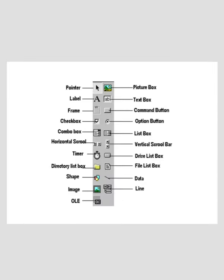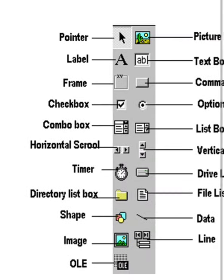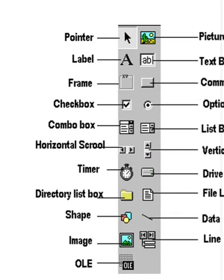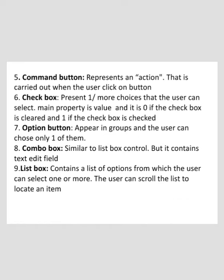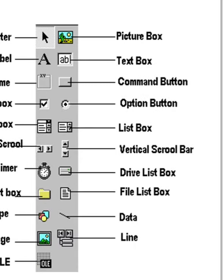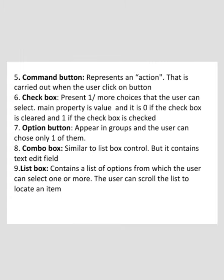The next option is the Frame. It is used to draw boxes on the form and to group other elements. The fifth option is the Command Button. It represents an action that is carried out when the user clicks on the button. The sixth is the Check Box. It presents one or more choices that the user can select. The main property is Value: it is zero if the check box is cleared and one if the check box is checked.